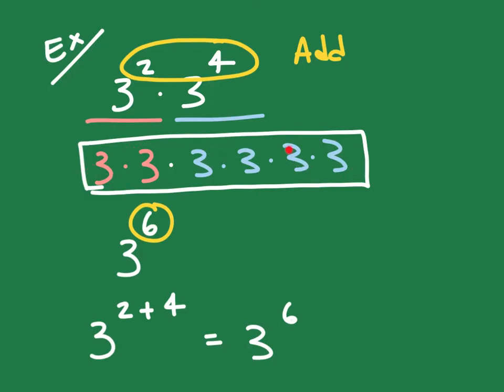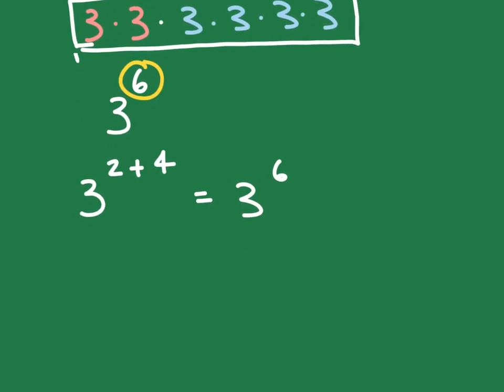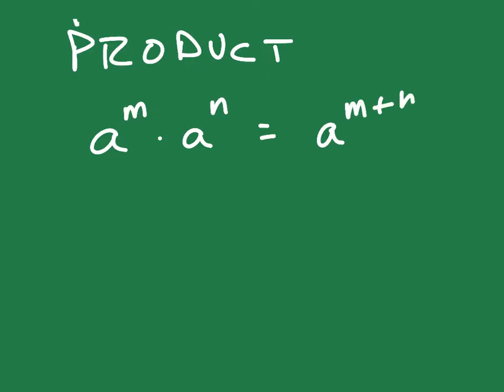So I expand this out so that you can see how I arrive at this rule. So we call this the product rule. The product rule is this: if we have some number a raised to the m power times a raised to the n power, then we can write that as a to the m plus n power, and you add your exponents if you're multiplying two things. The one thing that you got to remember is that the bases have to be the same, but the exponents can be different.